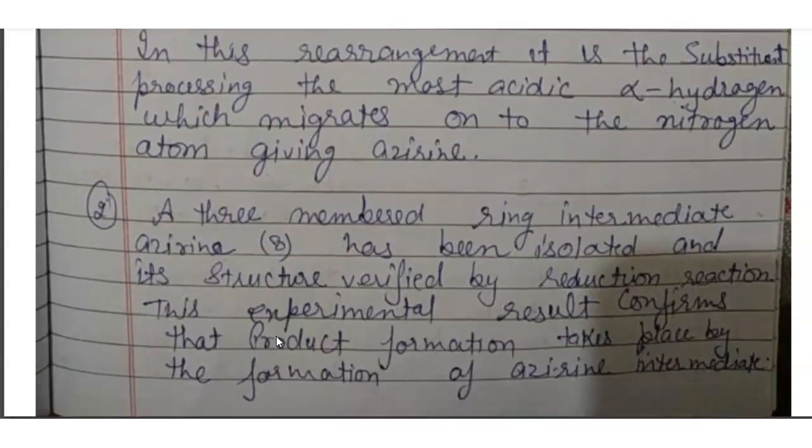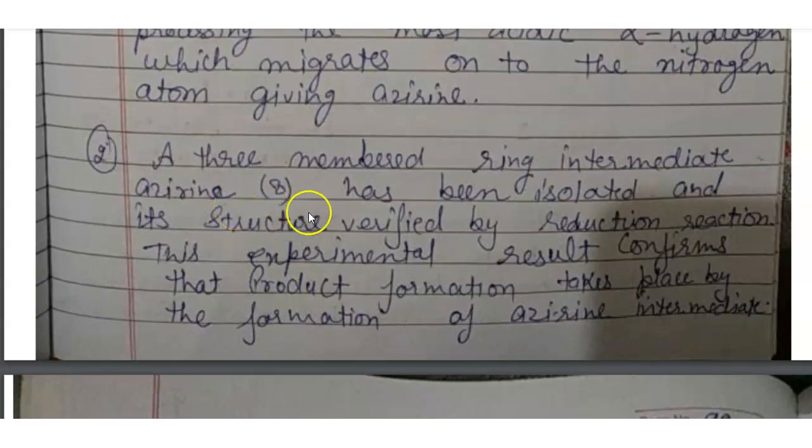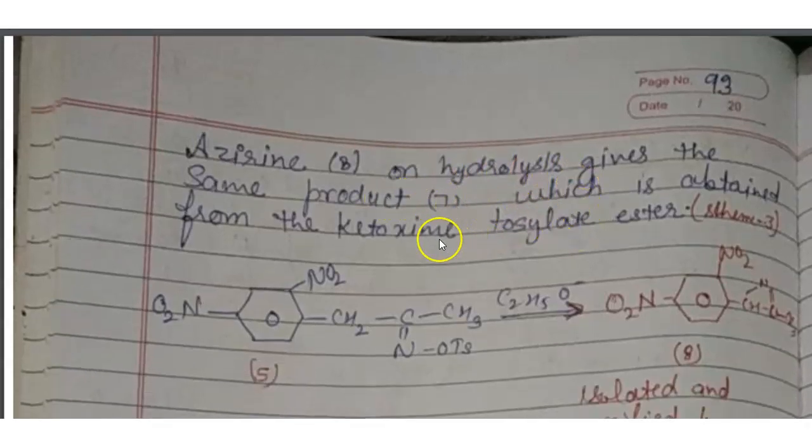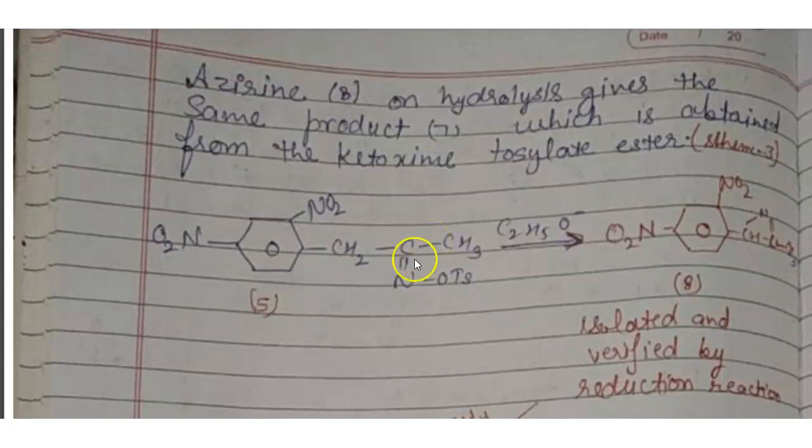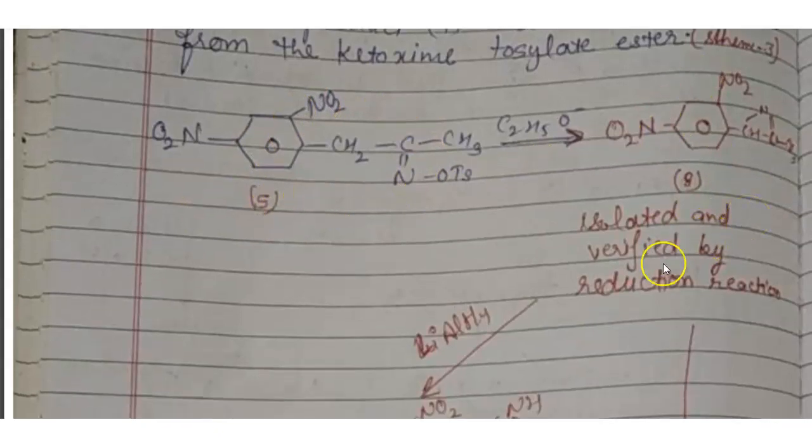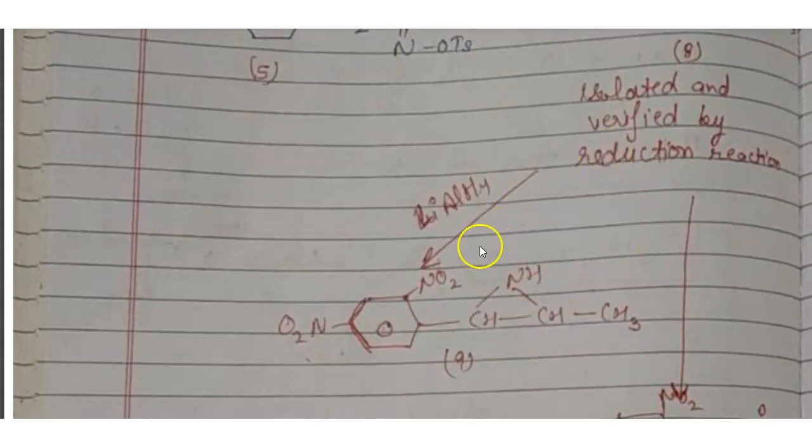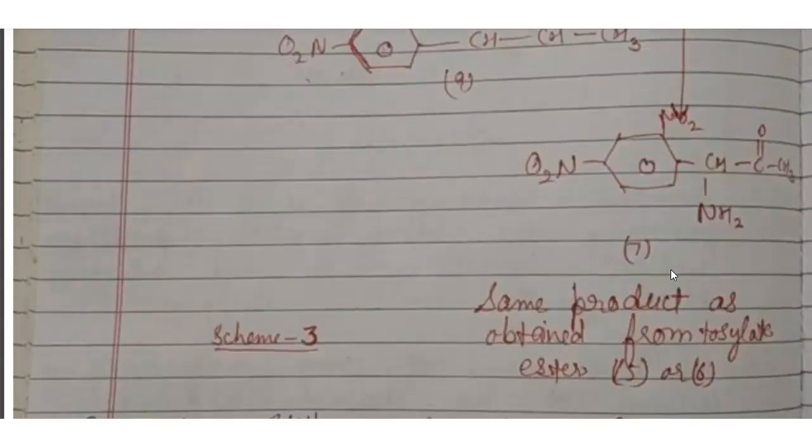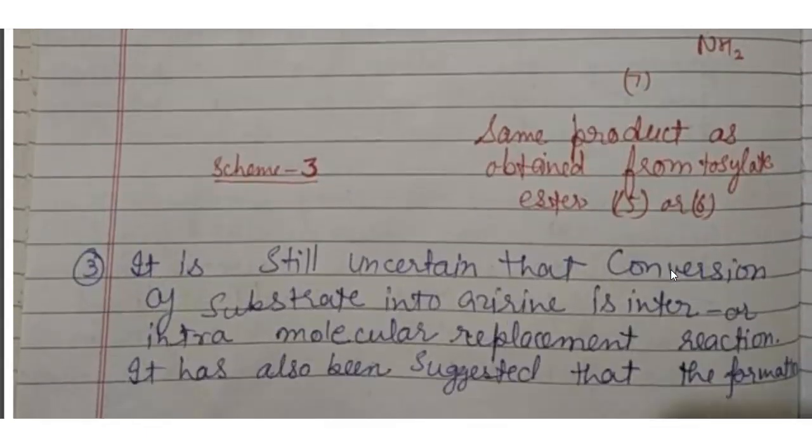In a second evidence, a 3-membered ring intermediate azirine has been isolated and its structure verified by reduction reaction. This experiment result confirms the product formation takes place by the formation of azirine intermediate. Azirine on hydrolysis gives the same product which is obtained from the ketoxime tosylate ester. Now, in showing this reaction to form this product and this is isolated and verified by reduction reaction in the presence of lithium aluminum hydride. So, we will get here this product and this product, same product as obtained from tosylate ester.